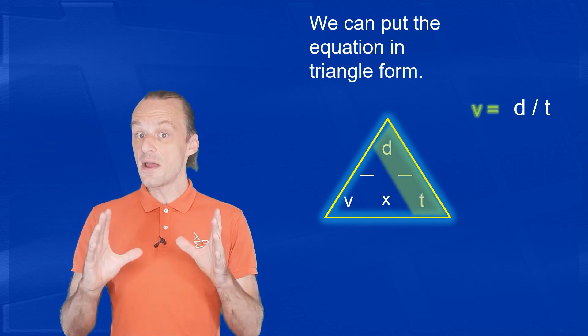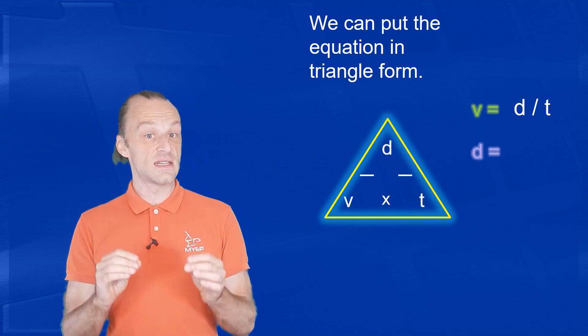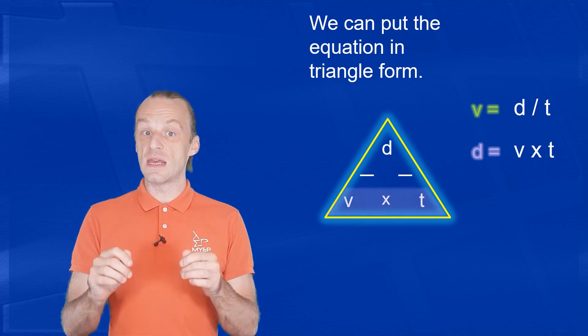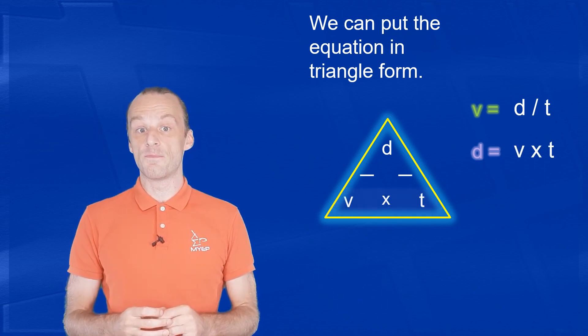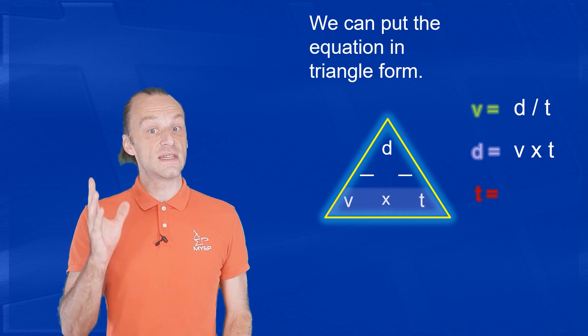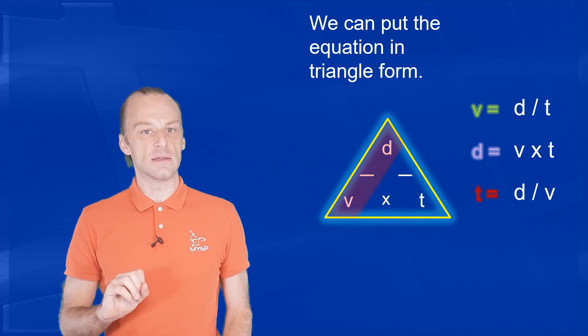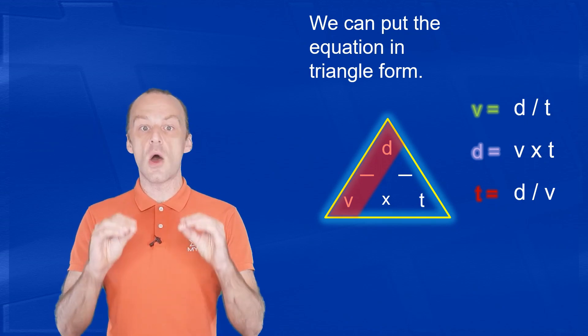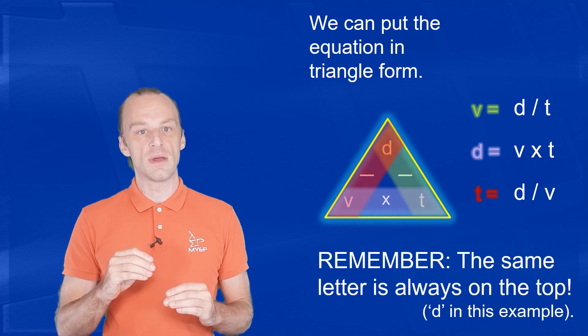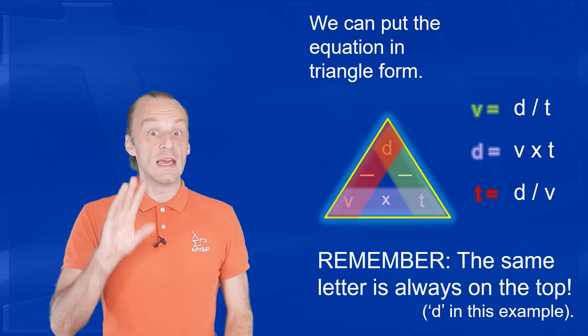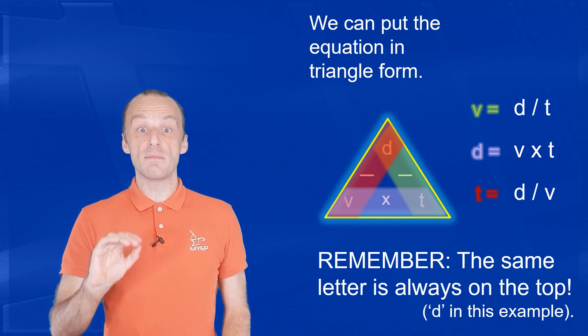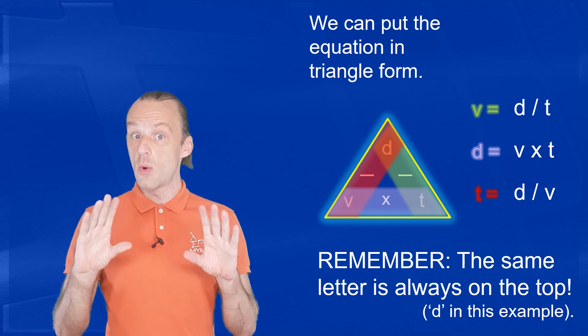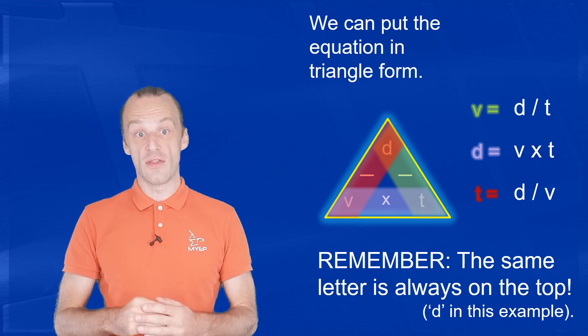We can see that speed V equals distance over time. But in the same triangle, we can also see that the distance D equals speed multiplied by time, and also that time T equals distance over speed. It is really important that the same letter always goes on top. So when you learn this triangle, D goes on the top, and that means that distance is always divided by one of the other letters.